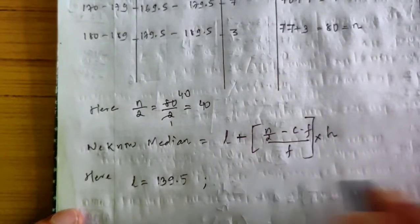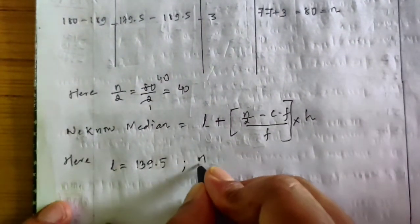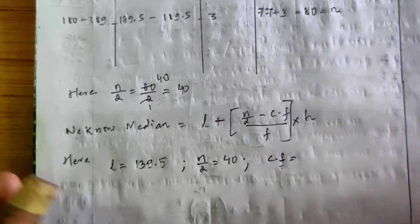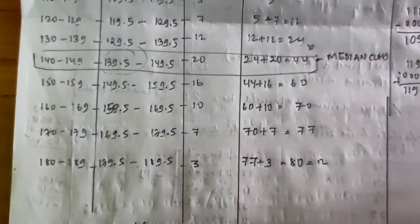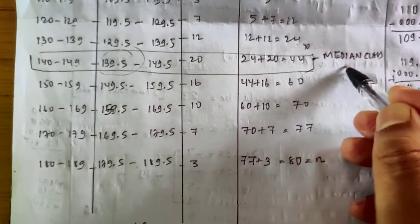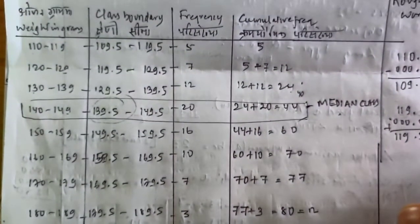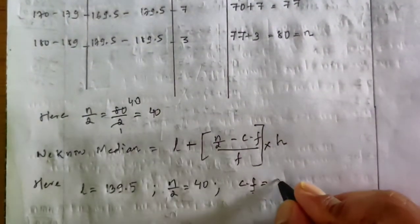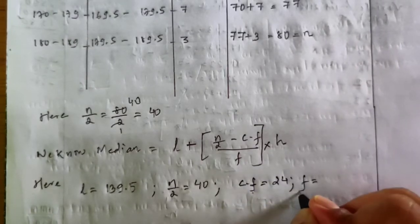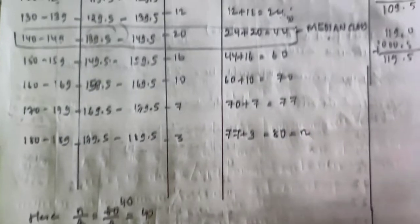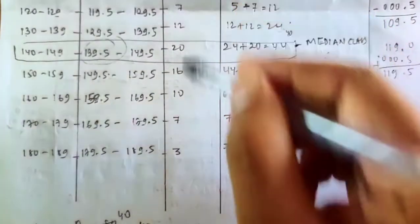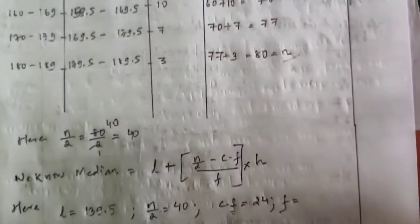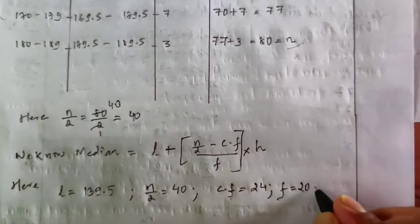n/2 is 40. cf — cumulative frequency of the class preceding the median class — this is the median class, so cf is 24. f is the frequency of the median class. Looking at the frequency table, the frequency of the median class is 20.